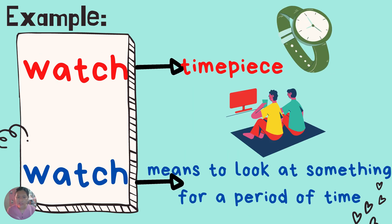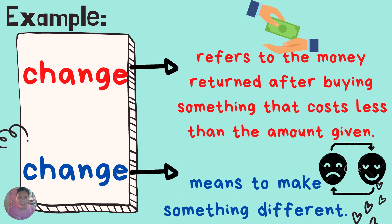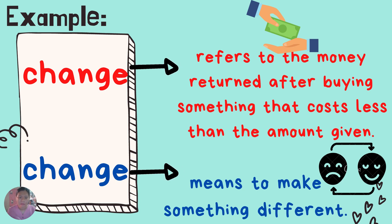Another example: watch and watch. Watch refers to a time period, while the second word watch means to look at something for a period of time. Watch and watch are homonyms because they have the same sound and spelling but with different meaning. Another example: change and change. The first word change refers to the money returned after buying something that costs less than the amount given, while the second word change means to make something different. Change and change are homonyms because they have the same sound and spelling but with different meaning.